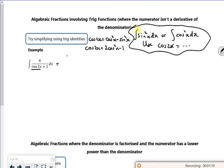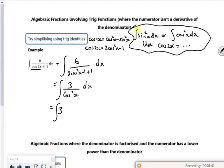So my integral will become 6 over 2cos²x minus 1, with a plus 1 dx. The 1's will go with the 3, 6 will cancel with the 2. So I've got 3 over cos²x dx. Cos squared, 1 over cos squared is secant squared.